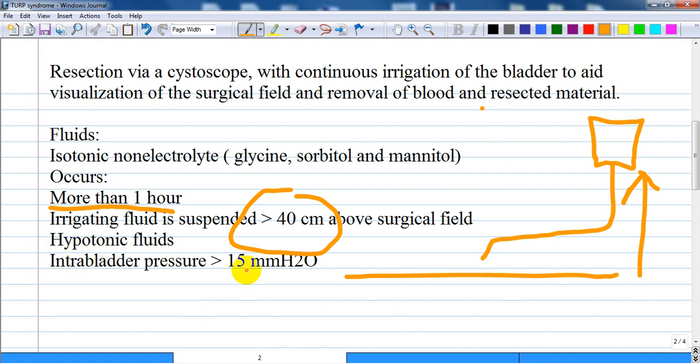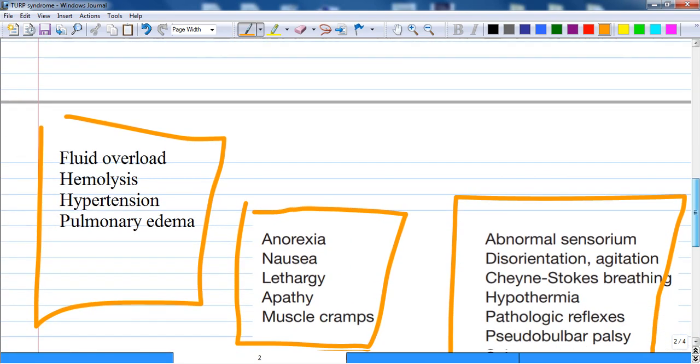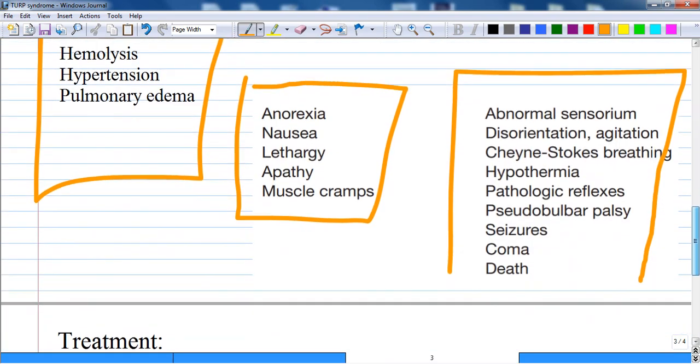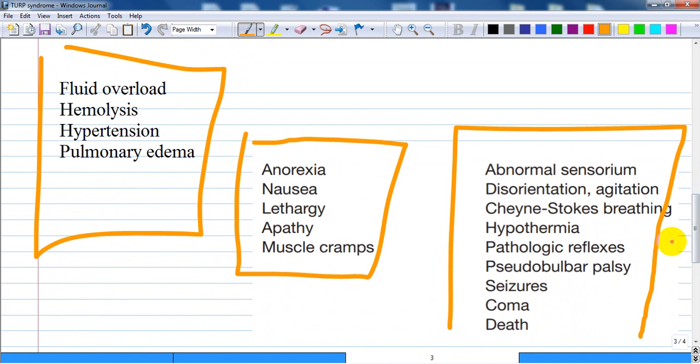What are the symptoms and signs of TURP syndrome? This manifests principally by fluid overload or cardiovascular signs, neurological signs, and signs of hyponatremia.